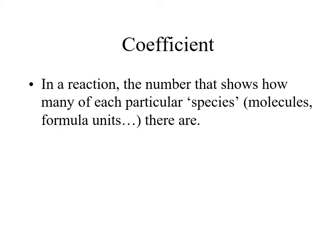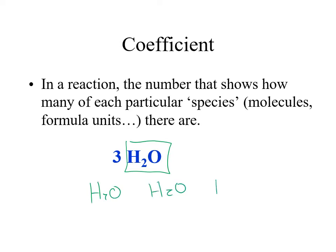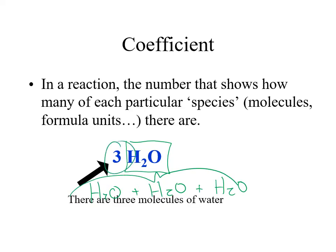Coefficients are what we use to write our balanced chemical equations. These are the numbers that show up in front of the species and represent the number of those species we have. When we write 3H2O, that's the same as saying H2O + H2O + H2O. We could write it out three times, but all of that is the same thing as saying three H2Os — that is the coefficient out front. So there are three of those water molecules.